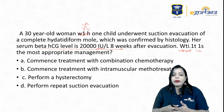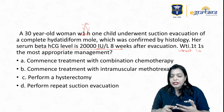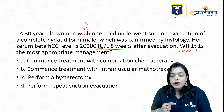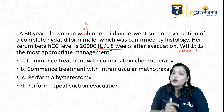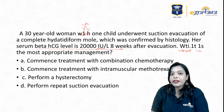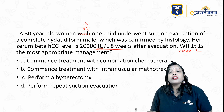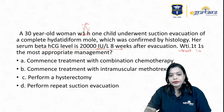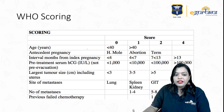The answer options are: commence treatment with combination chemotherapy; commence treatment with intramuscular methotrexate; perform hysterectomy; or perform repeat suction and evacuation. Whenever you are suspecting choriocarcinoma, the management of choriocarcinoma is based on WHO prognostic scoring.